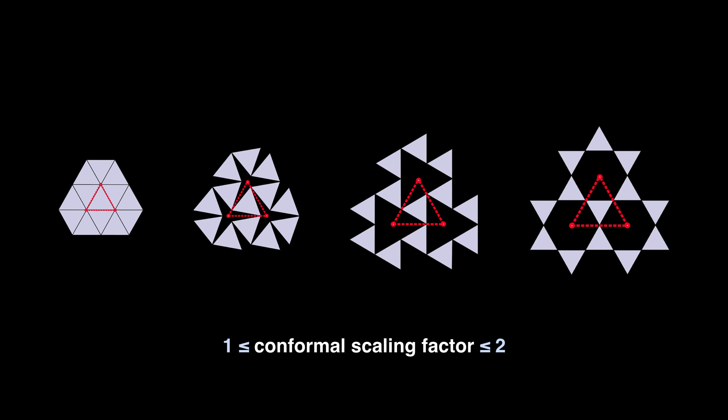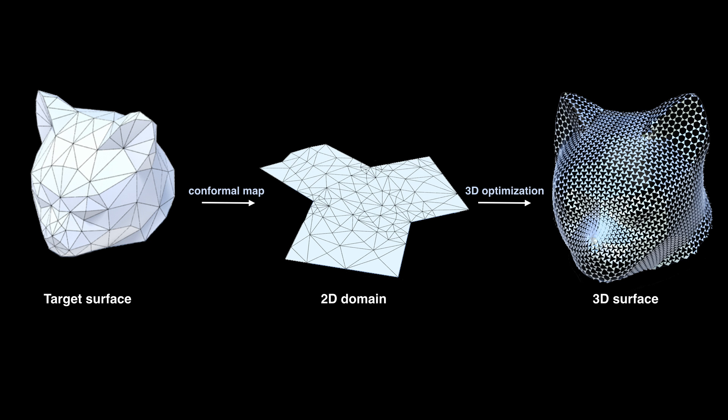As our auxetic linkage can stretch only up to 2 times in length, we need to have a conformal parametrization with bounded scaling factor between 1 and 2. To reduce the scaling factor in the parametrization, we add cone singularities until the scaling factor is within the bounds. And to obtain a seamless connection in the linkage along the cuts, we prescribed cone angles in the parametrization.